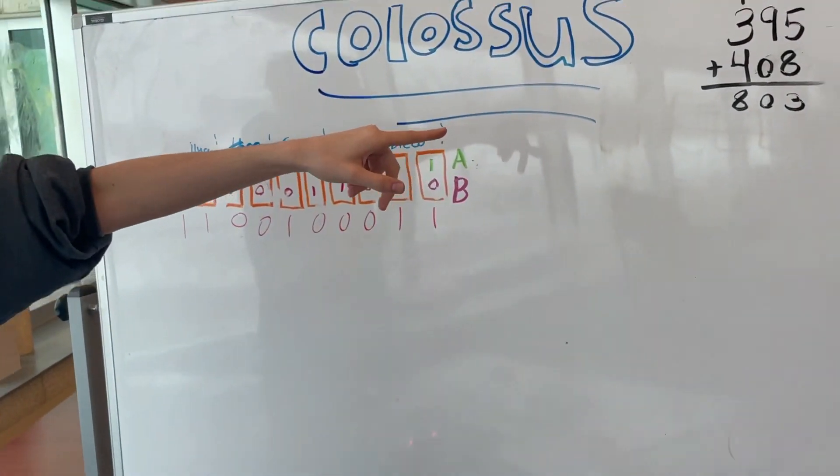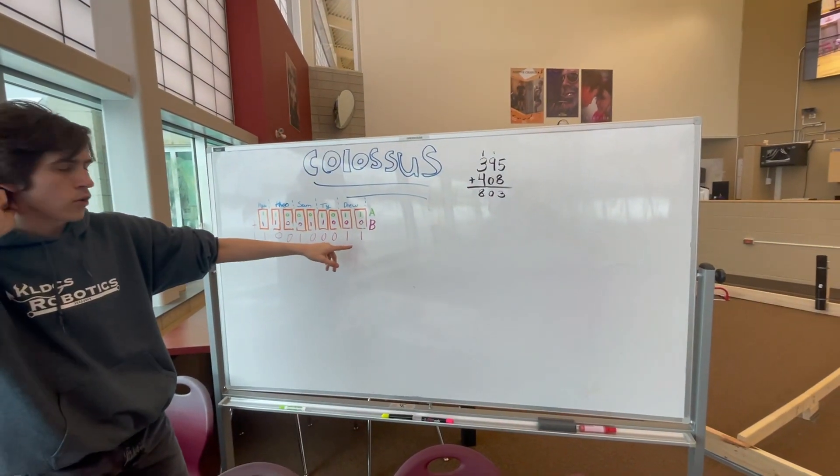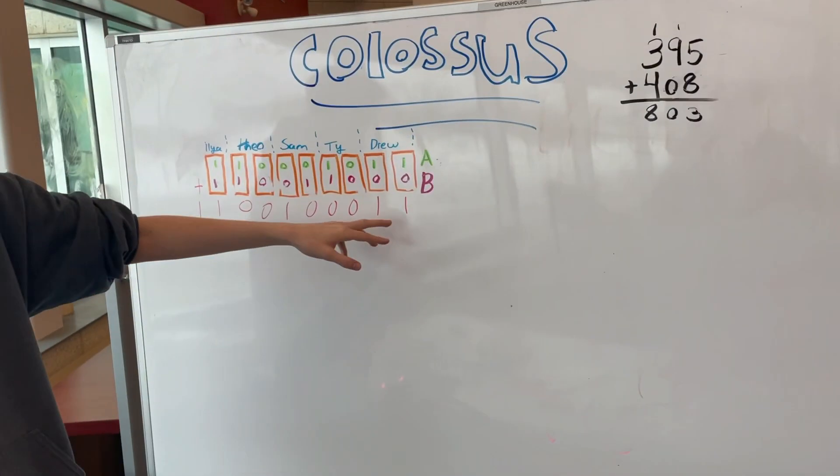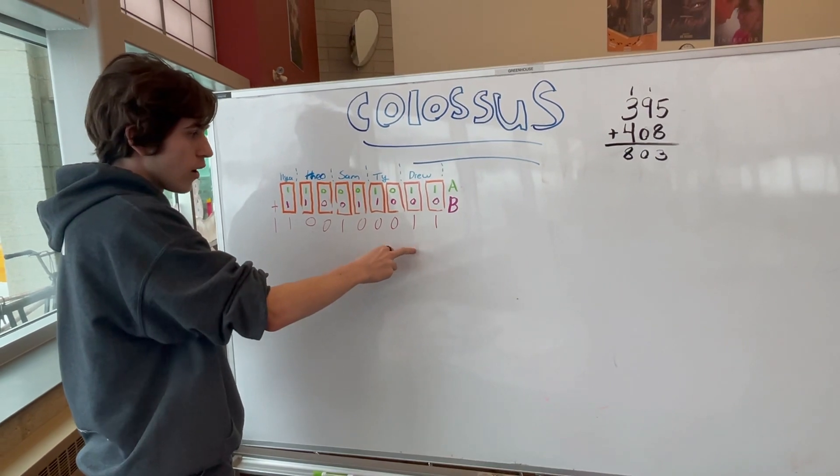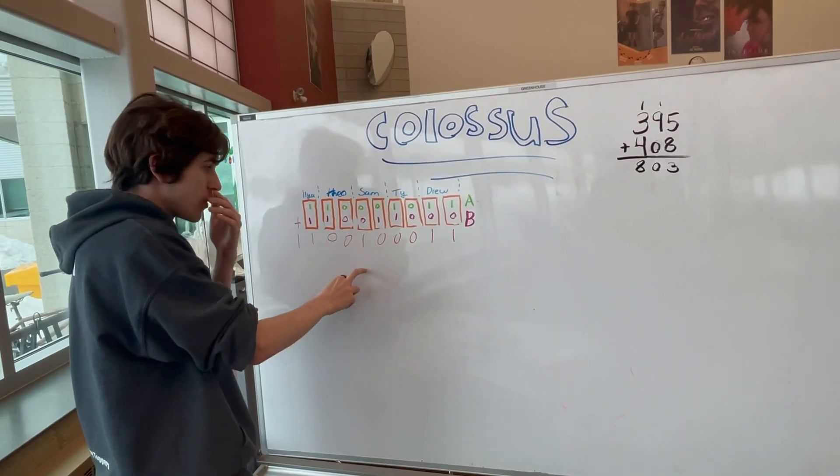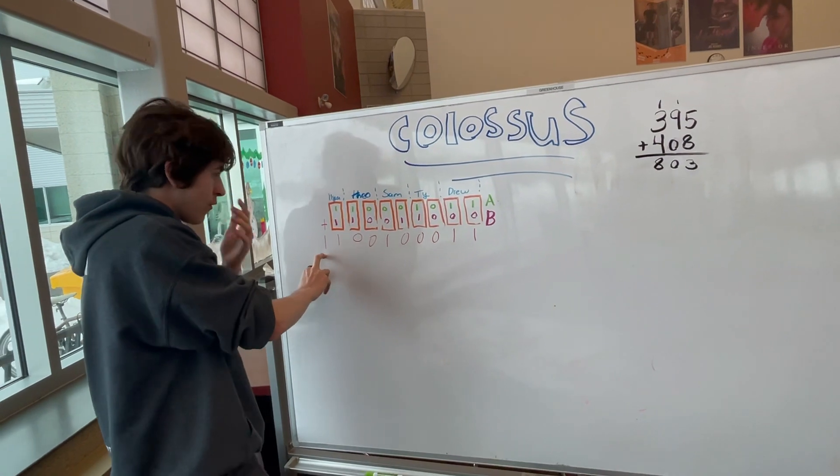Binary is base two counting. This is one, two, four, eight, sixteen, thirty-two, sixty-four, one hundred twenty-eight, two hundred fifty-six, five hundred twelve.